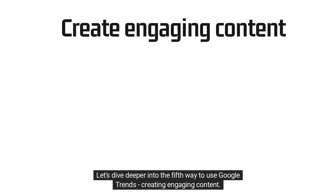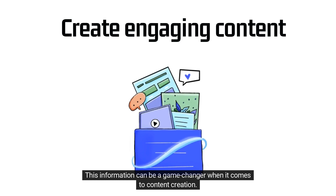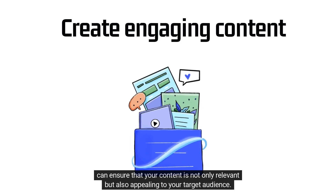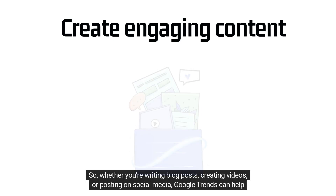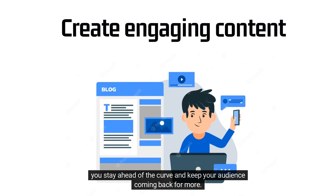Let's dive deeper into the fifth way to use Google Trends: creating engaging content. With Google Trends, you can get a pulse on what's hot and happening in your industry. This information can be a game changer when it comes to content creation. By creating content that's in line with the latest trends and what your audience is searching for, you can ensure that your content is not only relevant but also appealing to your target audience. Whether you're writing blog posts, creating videos, or posting on social media, Google Trends can help you stay ahead of the curve.